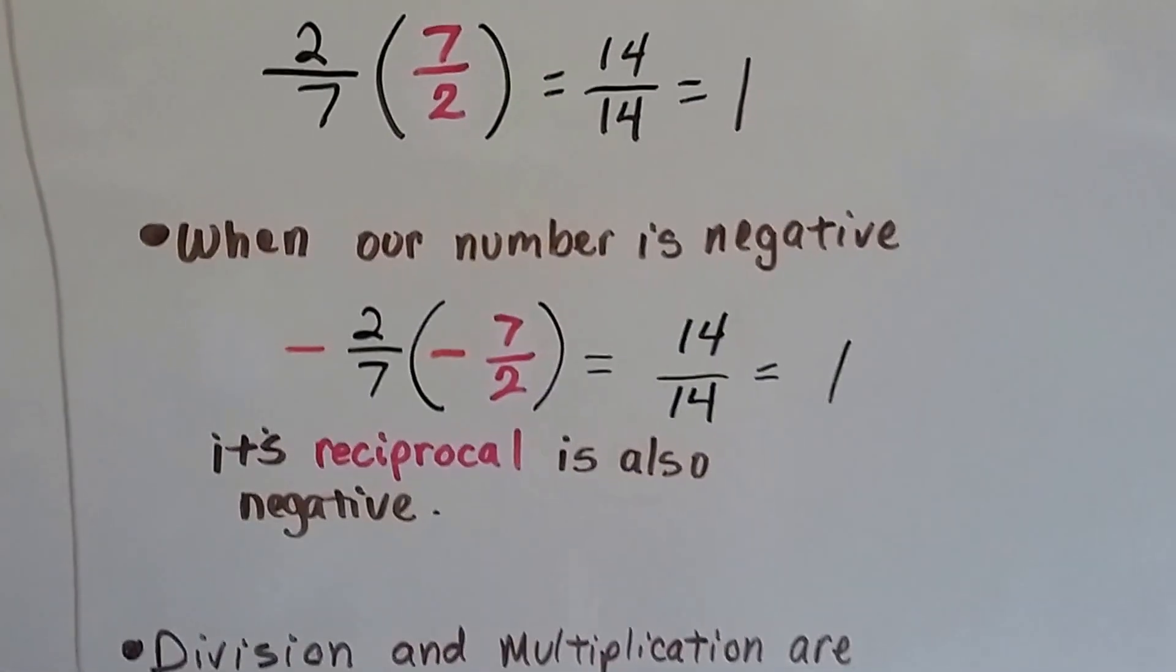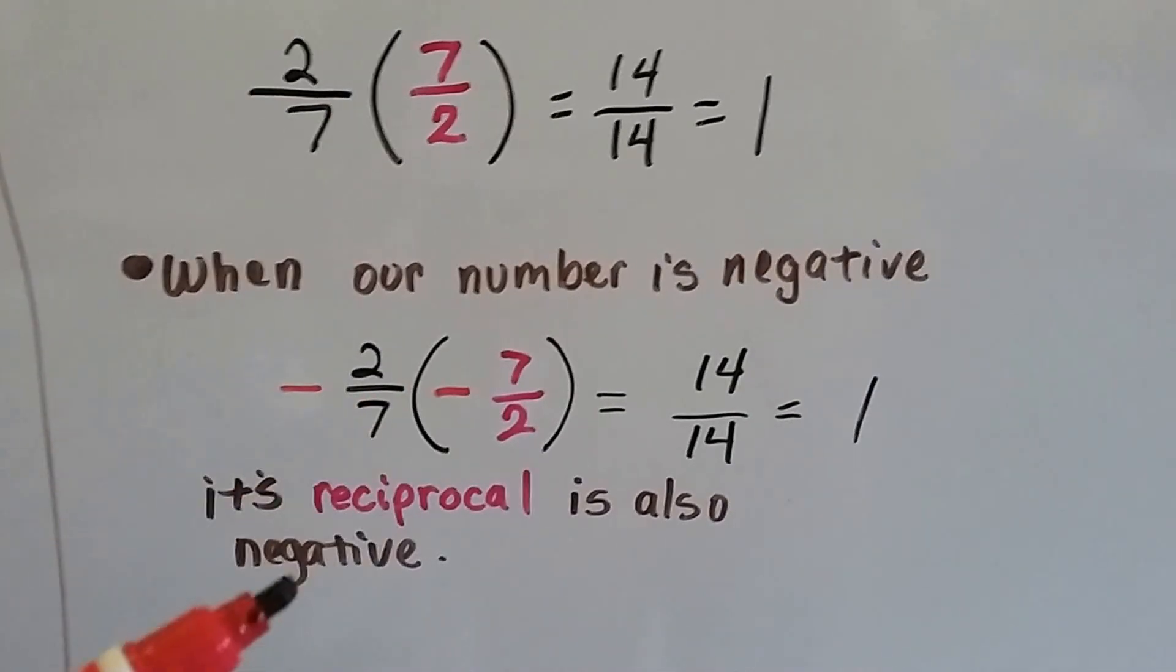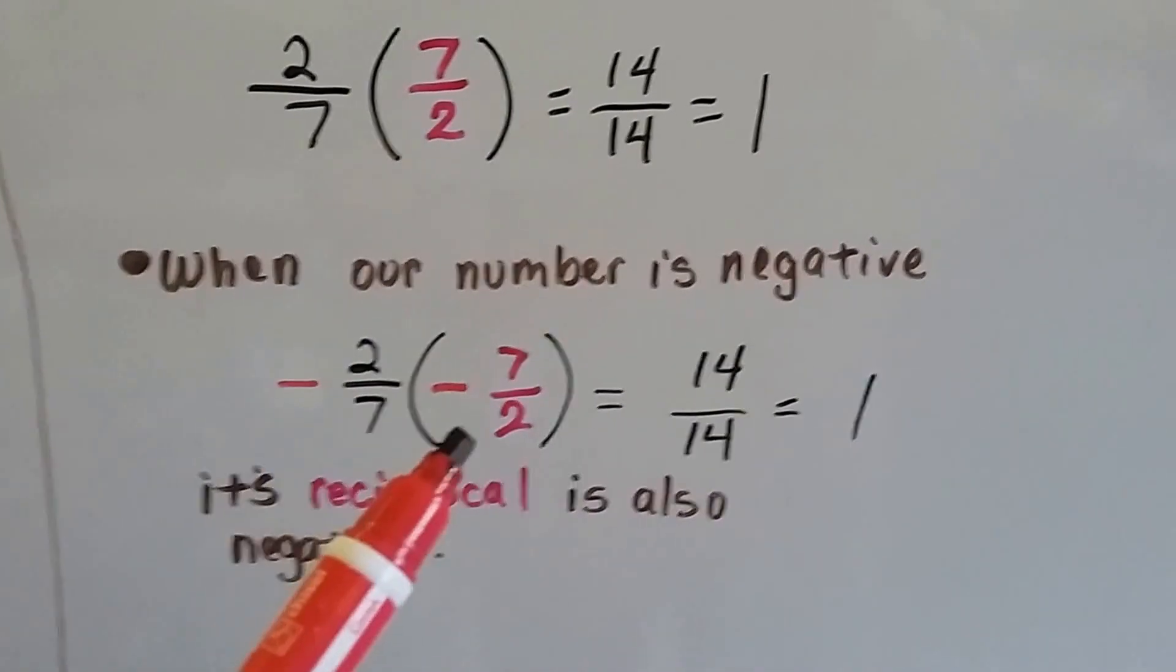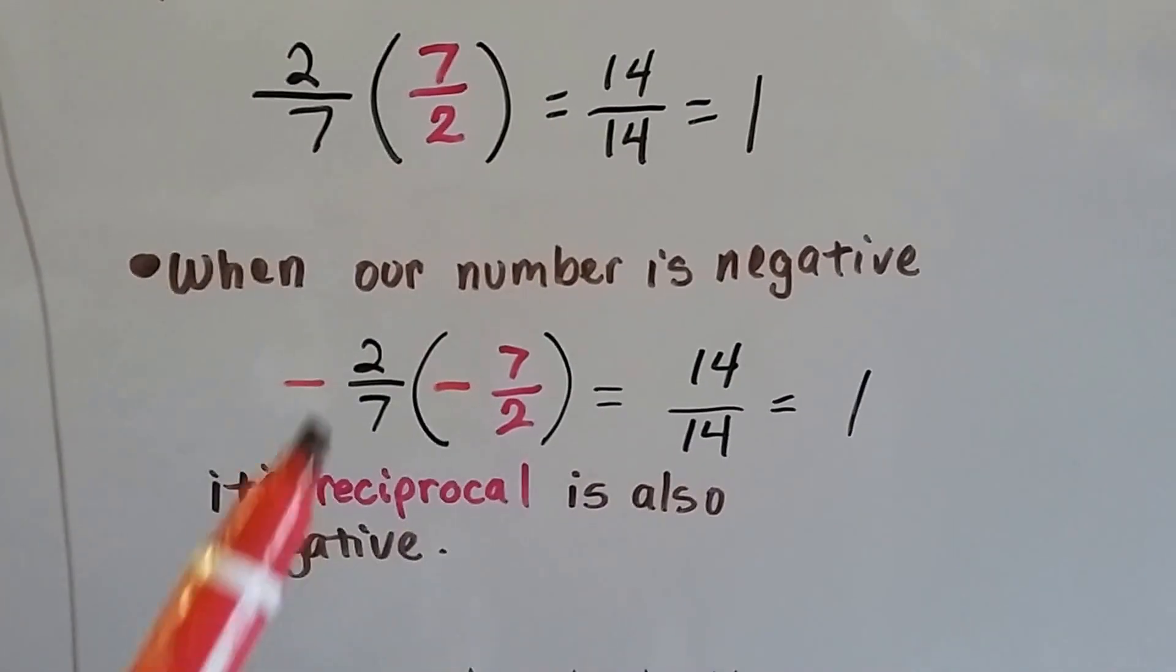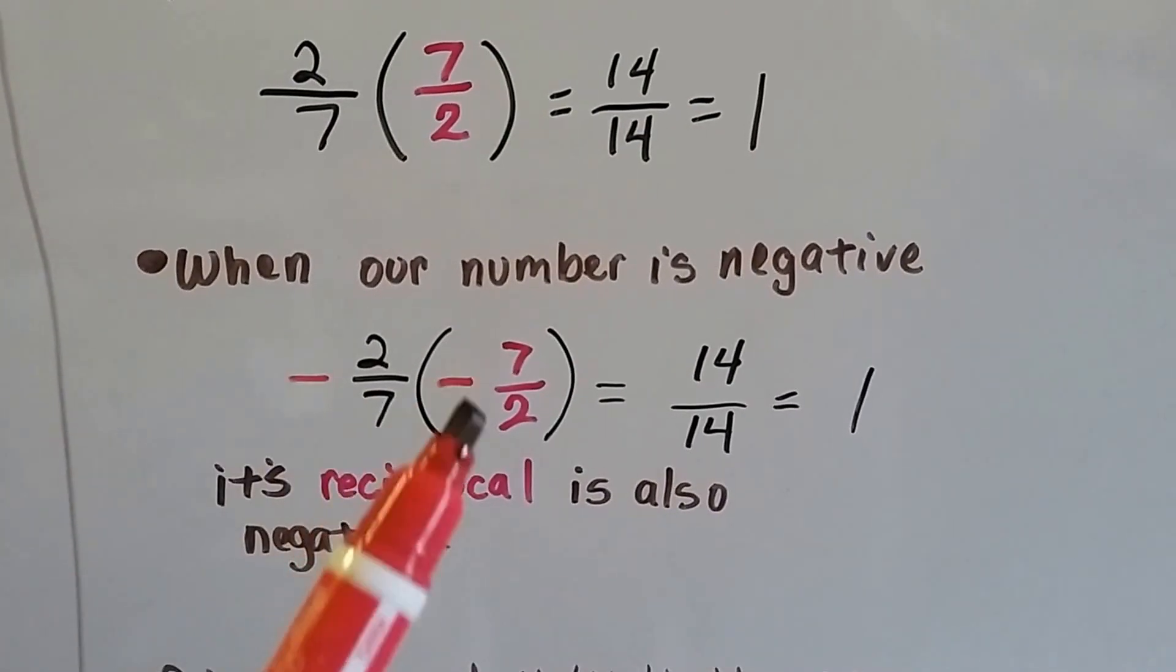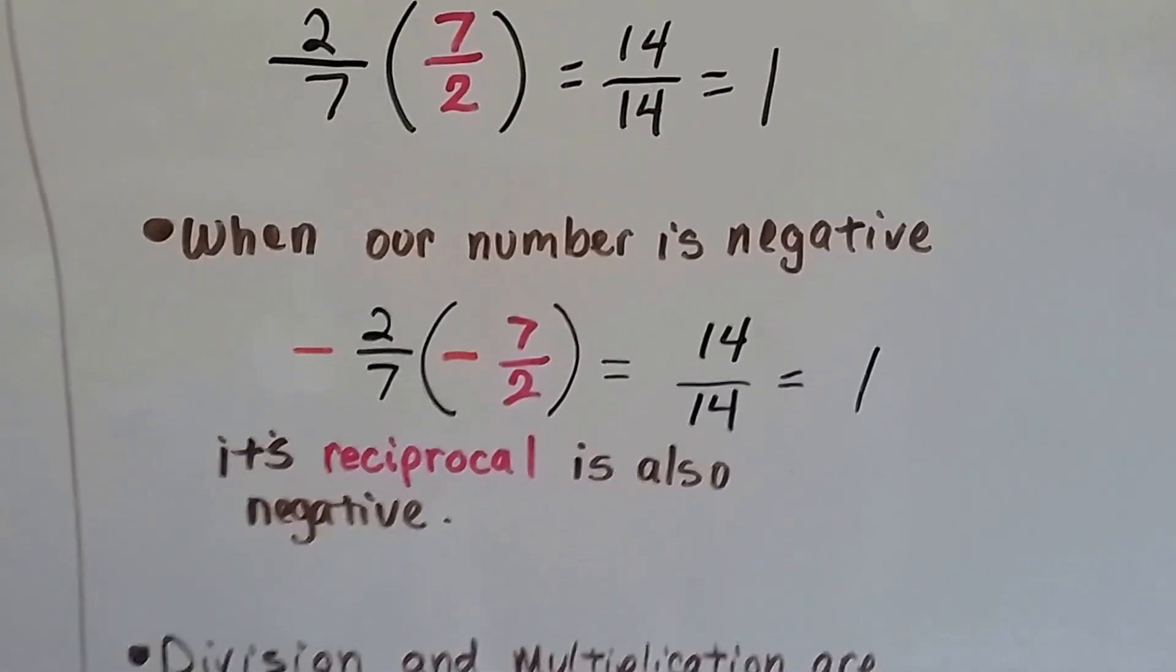When our number's a negative, its reciprocal is also negative. It stays negative. Negative 2 7ths, the reciprocal would be negative 7 halves. We'd get a negative times a negative, which makes a positive, and we'd get 14 over 14, so we have a positive 1.